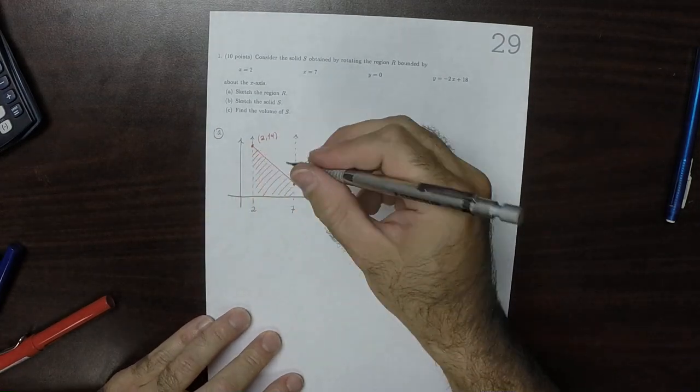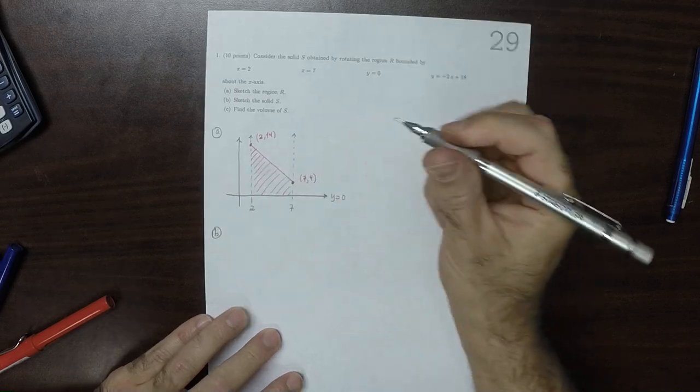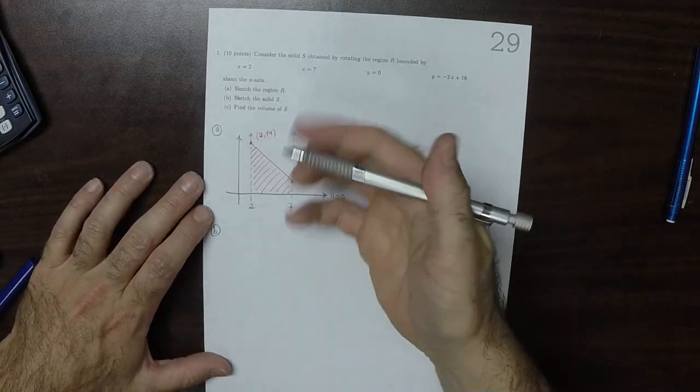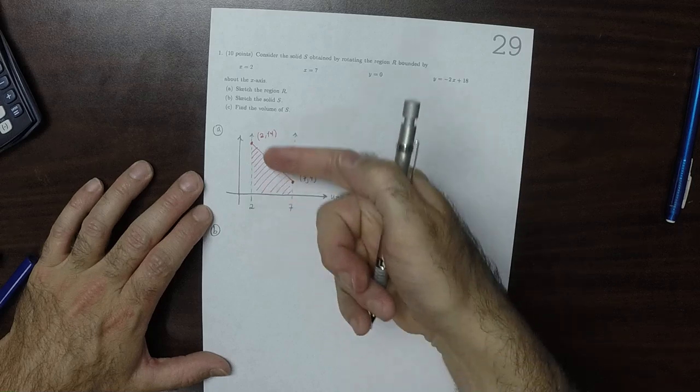Okay, so then B, is we're doing it around the x-axis. So that is to say, it's gonna rotate out of the page like this.